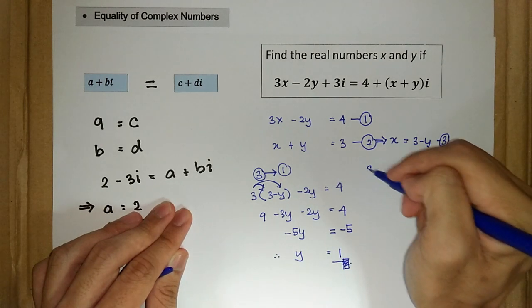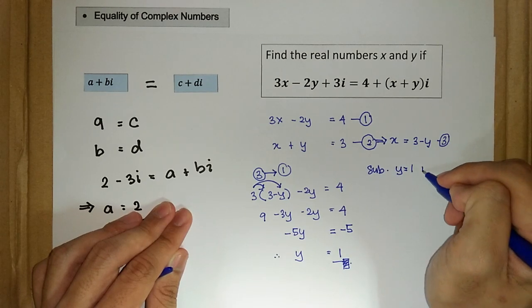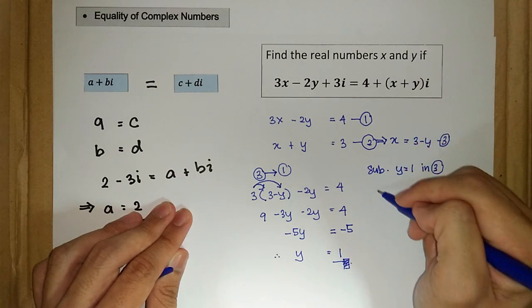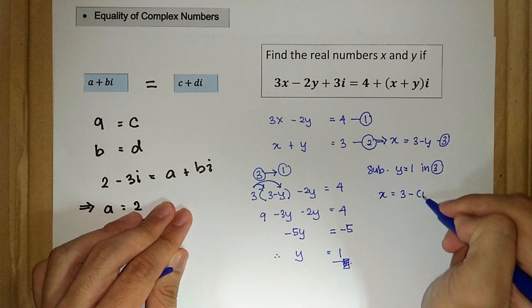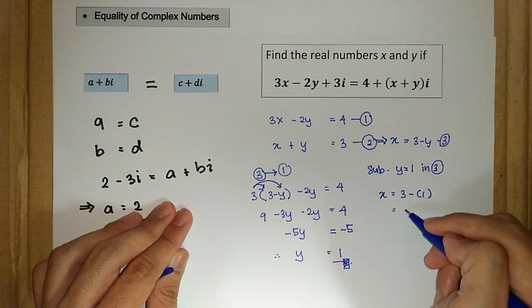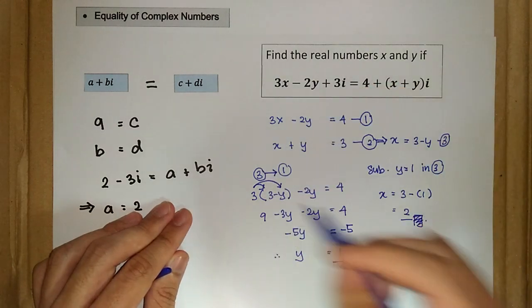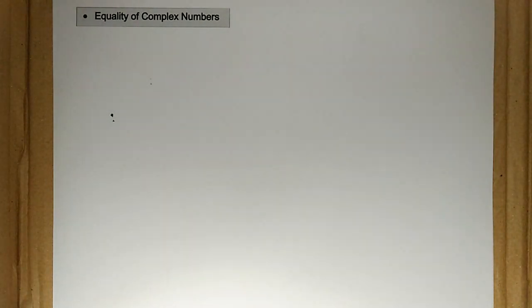Then we substitute y is equal to 1 into our third equation to find x. So we have x is equal to 3 minus 1, and x is equal to 2. This is the answer for this question. Now let's have a look at a more challenging question.